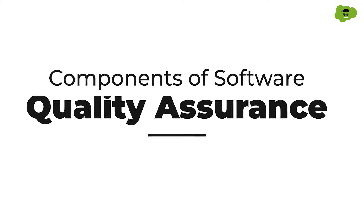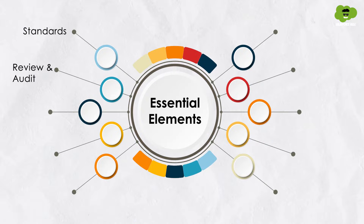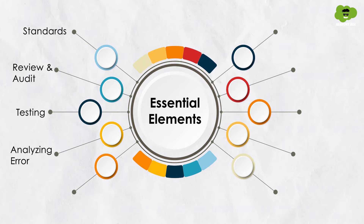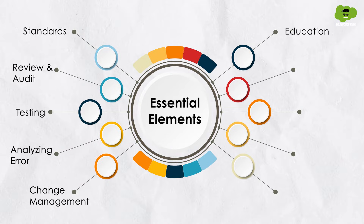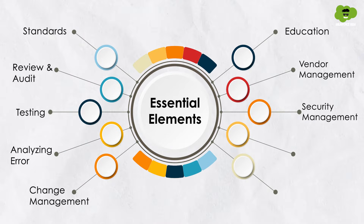Now let's discuss the components of Software Quality Assurance. A software's quality can be tested by performing various activities, but there are some essential elements that must be examined. These are included in almost every SQA plan as they are necessary to deliver high-quality, reliable, and compliant software. The essential elements are: standards, review and audit, testing, analyzing error, change management, education, vendor management, security management, safety, and risk management.